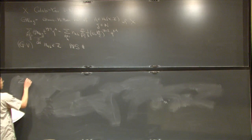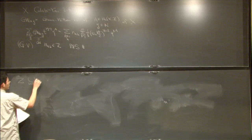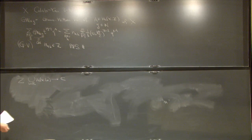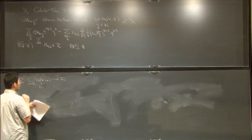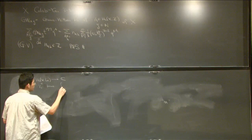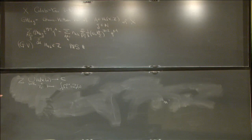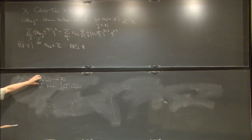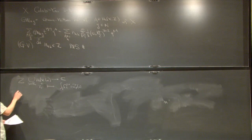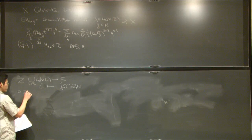Let me introduce a function called the central charge. It maps each relative homology class — with boundary on L_U — to C, by integrating the (2,0)-form on the relative class. I'll use the notation Z_γ(U), where B₀ is the locus of P¹ parametrizing smooth fibers. We can view this as a function on the local system. The first observation is that Z is a holomorphic function.